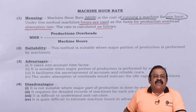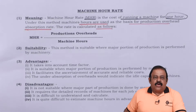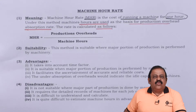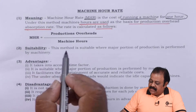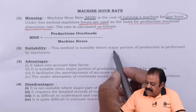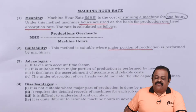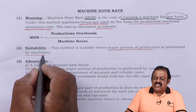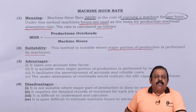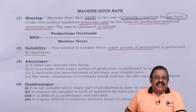Production overheads are required to be collected from various source documents — the amount of production overheads must be collected, codified, classified, and finally absorbed in our calculation. Regarding suitability, this method is suitable where the major portion of production is performed by machinery, where the role of machinery is more important in the process of production. In mechanized or automated systems, the concept of machine hours becomes more relevant.